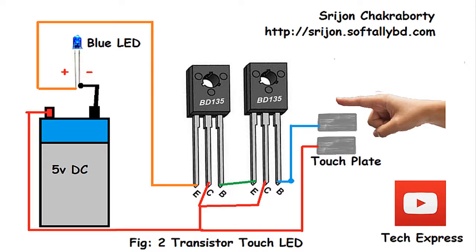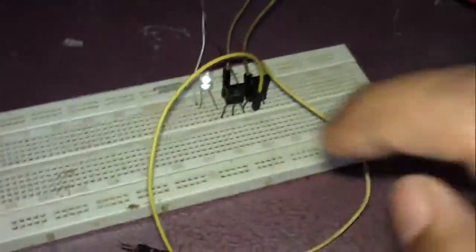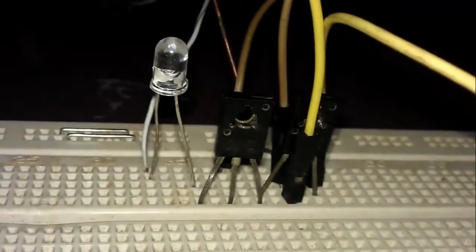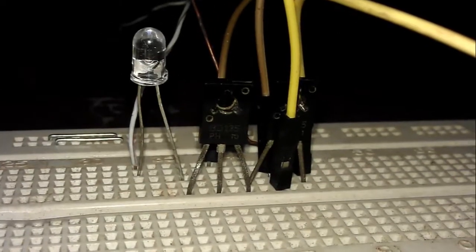Let's implement that circuit on the breadboard. I have built that circuit on my breadboard. My power source is connected with my circuit. You can see two transistors are connected in the breadboard, and the blue LED is connected properly.